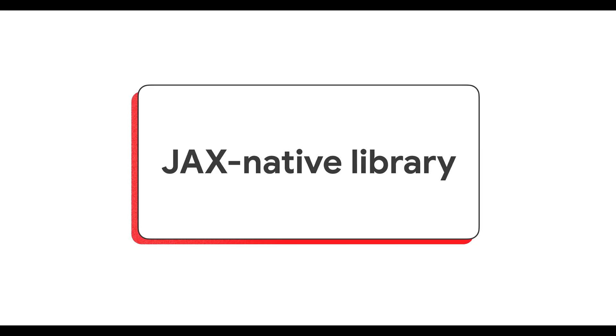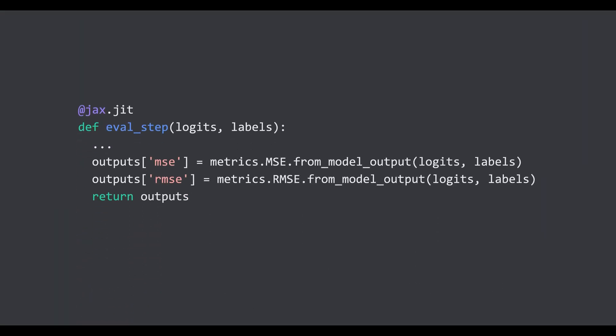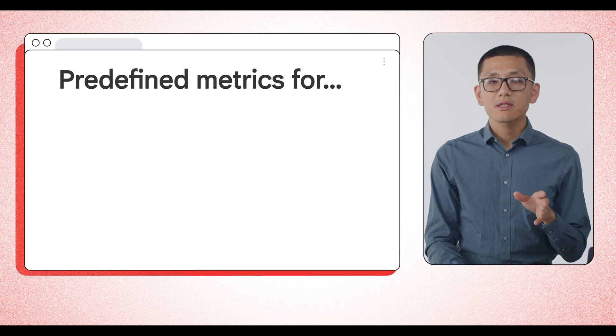One of Metrax's core strengths lies in its foundation as a JAX-native library, which allows it to leverage key JAX features like VMAP and JIT, or just-in-time compilation. Many of Metrax's metrics are JIT-able, meaning they can be seamlessly integrated with the JAX.JIT function, significantly improving performance and accelerating your evaluation workflows. While not every metric can be JIT compiled, the library is designed with best practices, ensuring that all metrics are still well-written and optimized where possible.